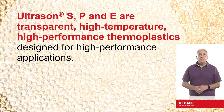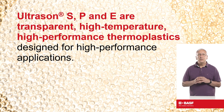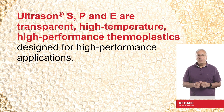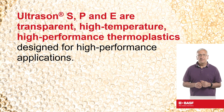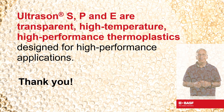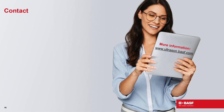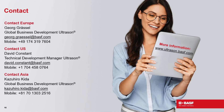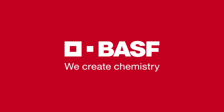This is the end of our first session, an overview of Ultrason, where we've shown that BASF produces an extensive range of sulfone polymers — materials that are transparent, high-temperature, high-performance thermoplastics designed for demanding high-performance applications. Thank you for your attention. Feel free to contact us globally with any questions or comments, as we would be happy to support your needs in Europe, the Americas, and Asia. BASF — We create chemistry.